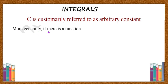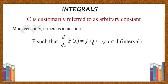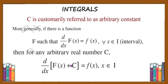More generally, if d by dx of F of x is equal to f of x, then for any arbitrary real number c, the derivative of F of x plus c is also f of x. This is because the derivative of the sum of two functions equals the derivative of the first function plus the derivative of the second function, and the derivative of a constant is 0. Therefore, d by dx of F of x plus c equals f of x, for all c where c is any real number.